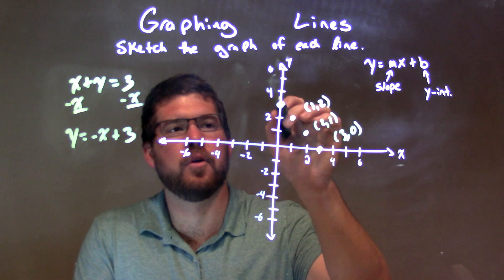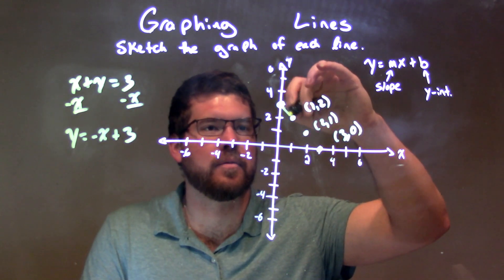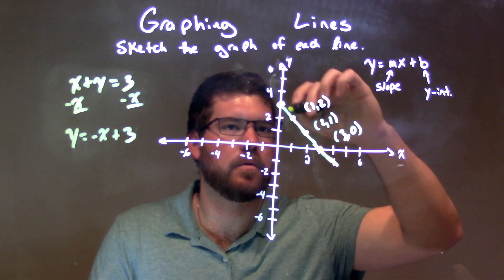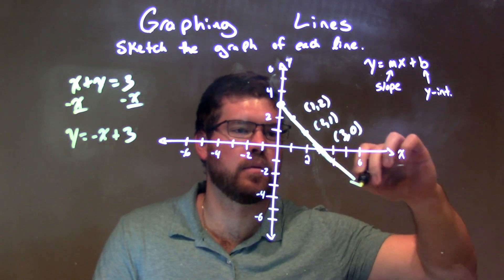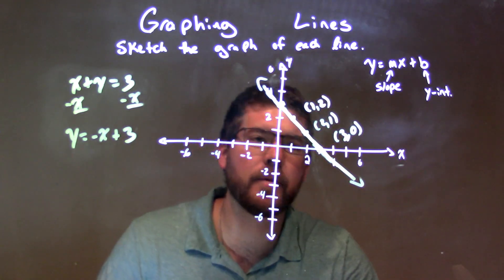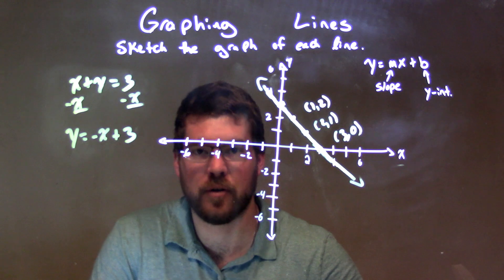So again, the slope is negative 1, down 1 over 1, we connect the dots, right there. And there we have our graph.